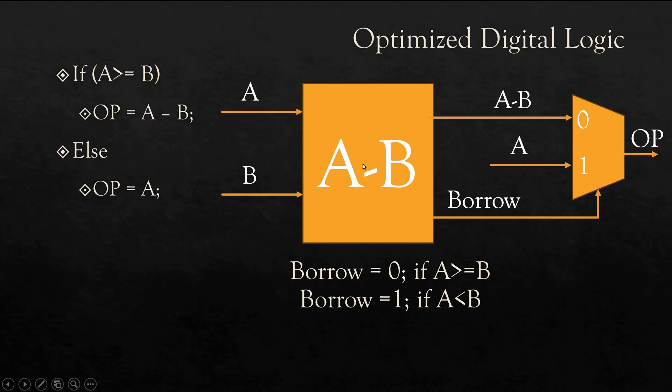So this is a subtractor which is making A minus B. If A is greater than or equal to B, borrow will be always zero. If B is greater than A, then borrow will be one. If A is greater than or equal to B, borrow is zero. If B is greater than A, borrow is one. So no need to take separate comparator here.